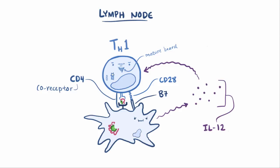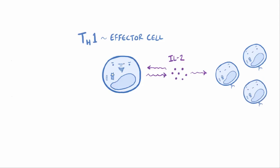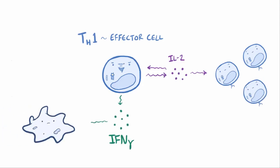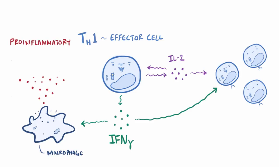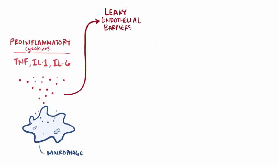At this point, the CD4-positive T cell is no longer considered naive. Instead it's an effector cell that's able to release the cytokine interleukin-2, which helps both it and other T cells in the area proliferate, as well as interferon gamma, which activates phagocytes like macrophages and creates more TH1 cells. Those activated macrophages release pro-inflammatory cytokines like tumor necrosis factor, interleukin-1, and interleukin-6, which causes leakiness in the endothelial barriers and allows more immune cells into the area, all of which leads to local swelling or edema, redness and warmth, as well as systemic symptoms like fever.